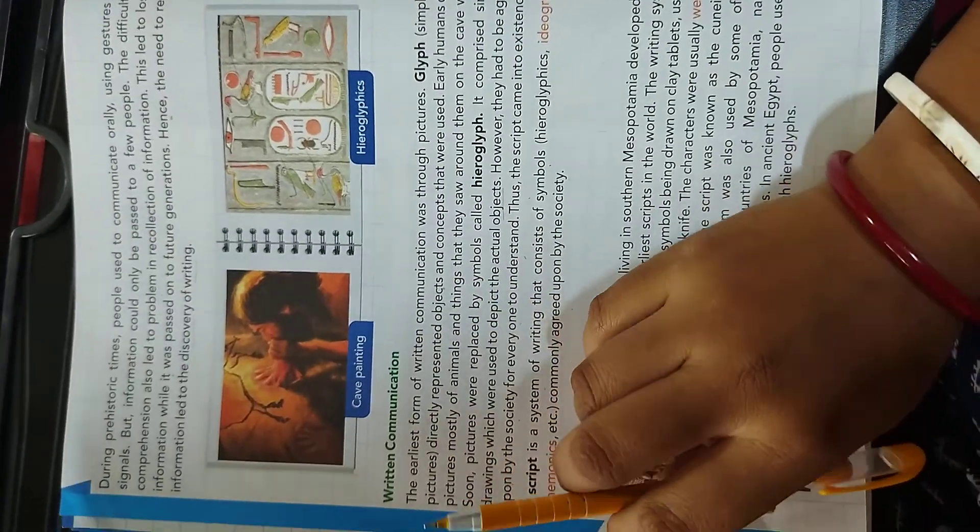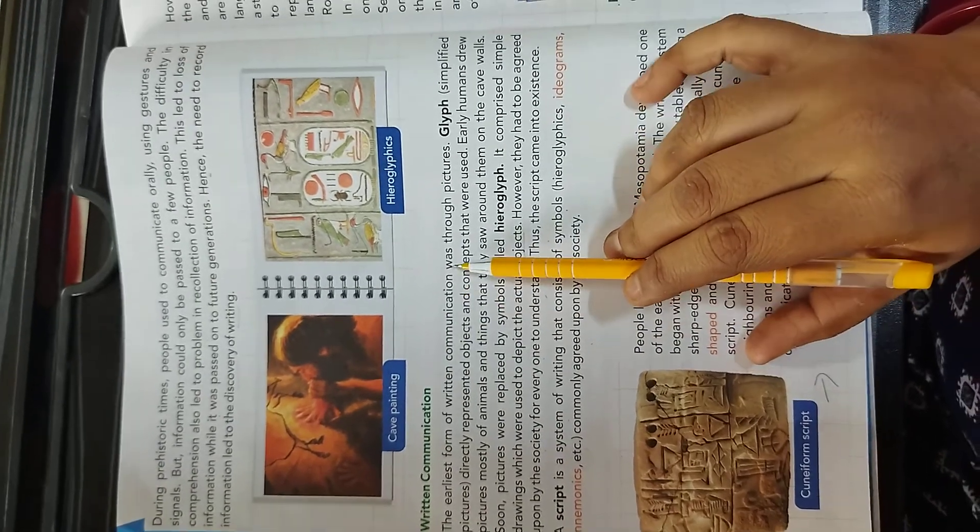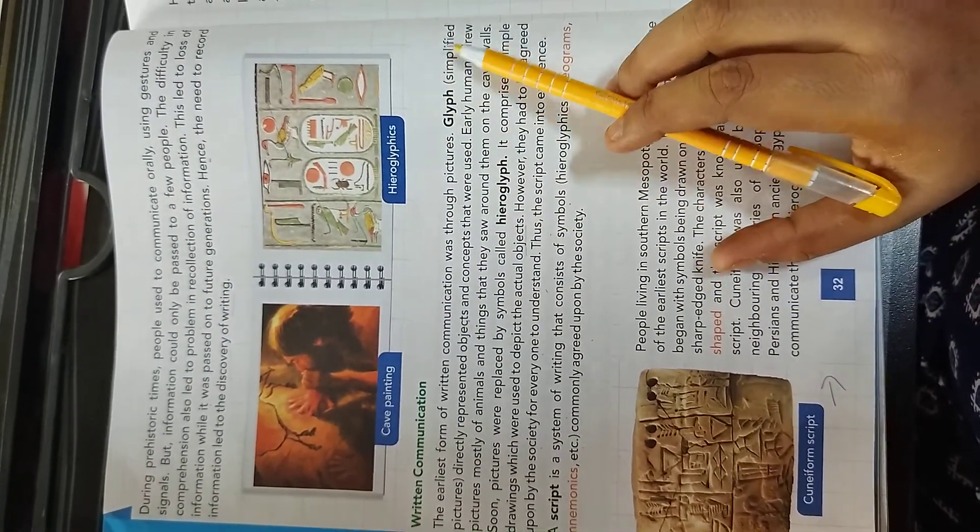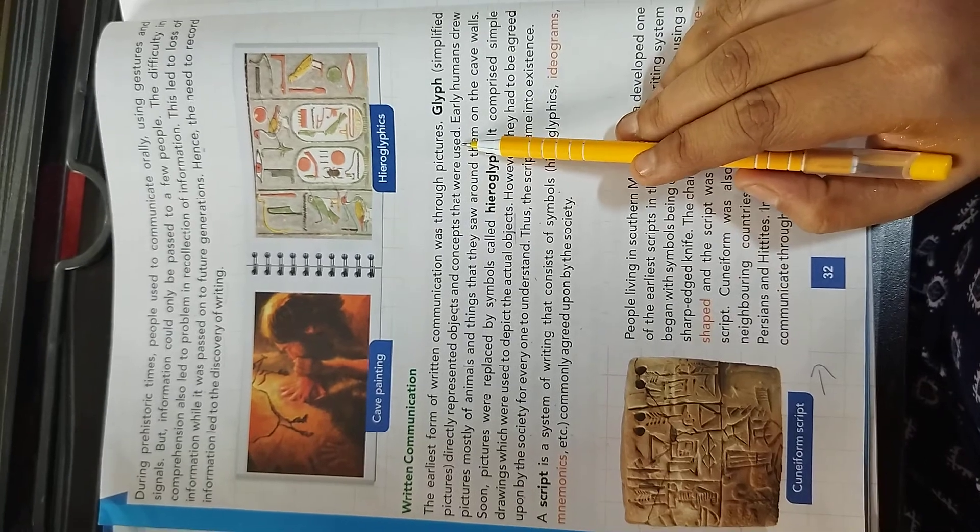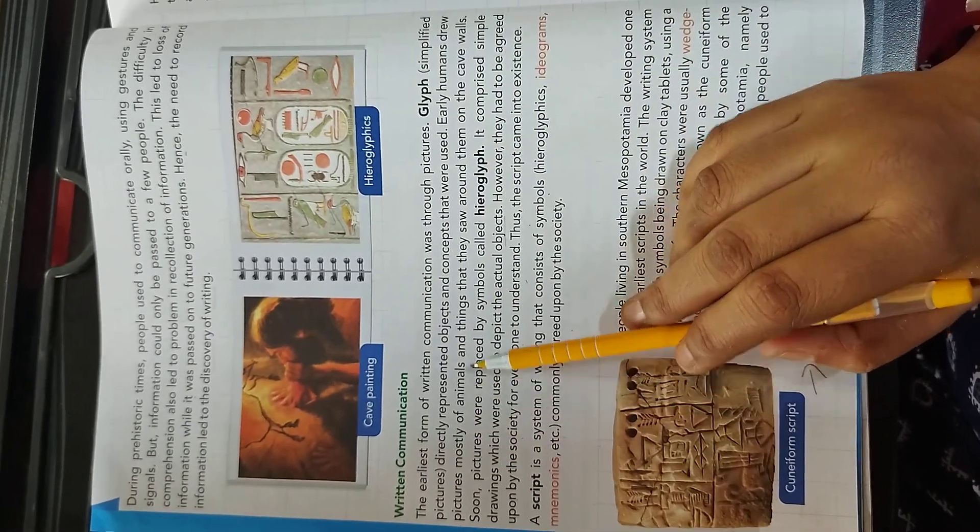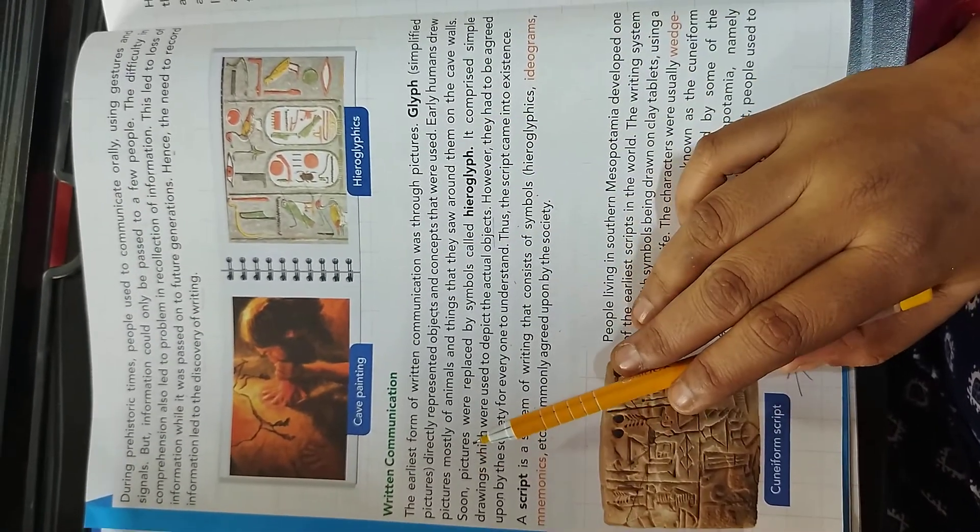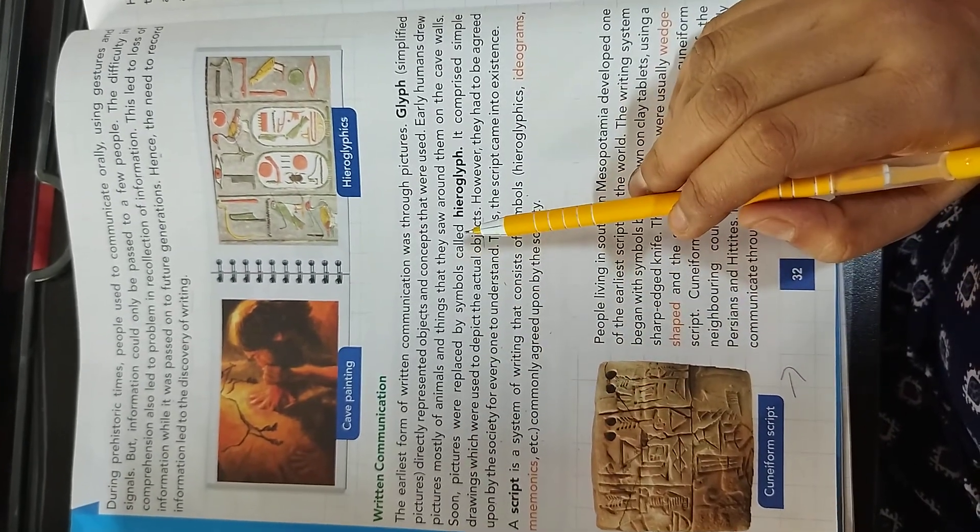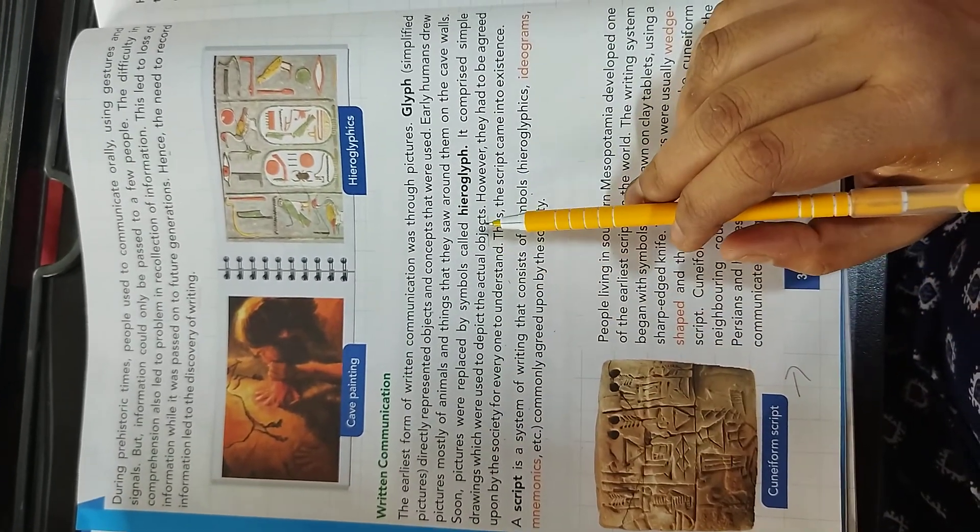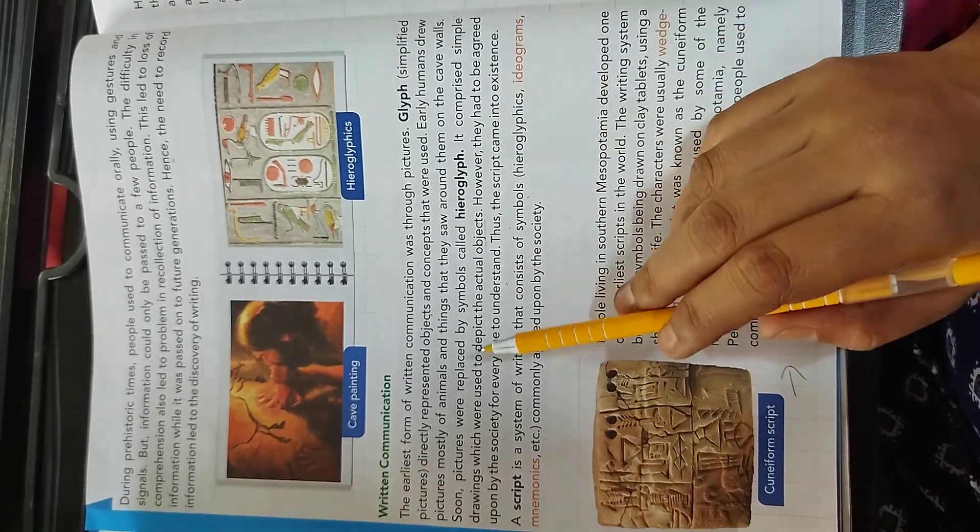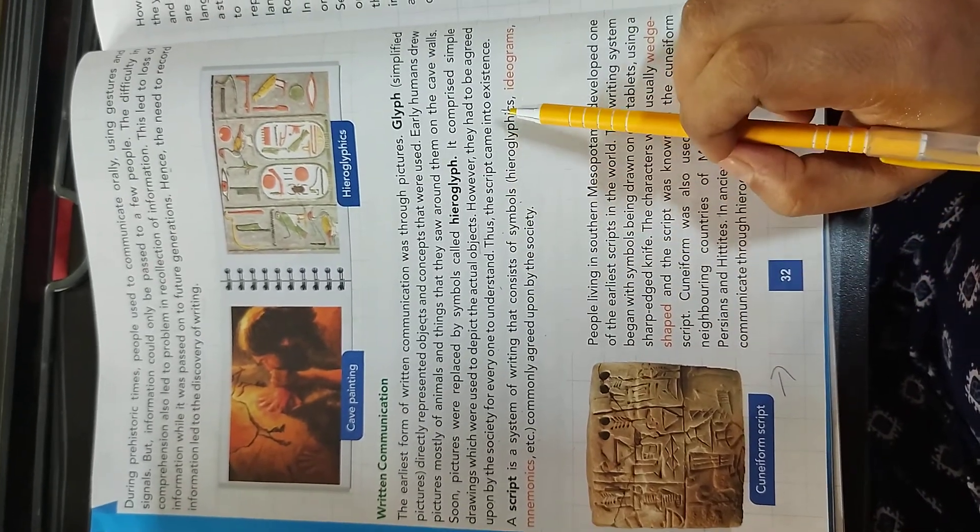Written communication. The earliest form of written communication was through pictures. Glyphs, that means simplified pictures directly represented objects and concepts that were used. Early human drew pictures mostly of animals and things that they saw around them on the cave walls. Soon pictures were replaced by symbols called hieroglyphic. It comprised simple drawing which were used to depict the actual object. However, they had to be agreed upon by the society for everyone to understand. Thus, the script came into existence.